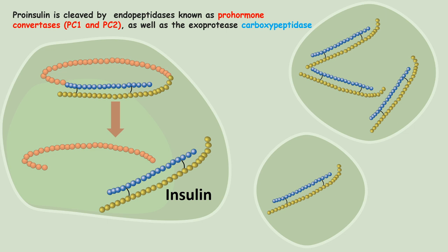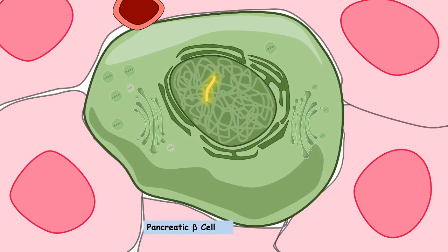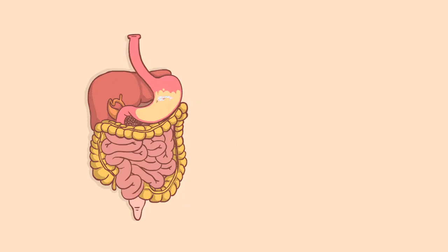Since the INS gene is expressed most of the time, insulin is always ready — cleaved and packaged inside the vesicle — but without a particular context, insulin is not secreted. Insulin is only secreted when blood glucose levels are high, directing glucose into cells so they can utilize it. The insulin is packaged in the vesicle but waiting for a signal, which is essentially the blood glucose level.